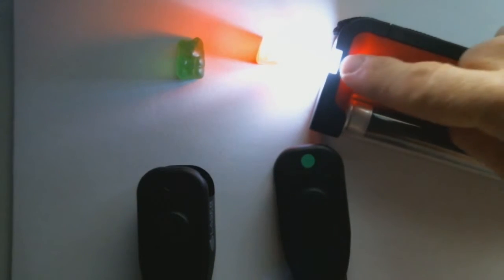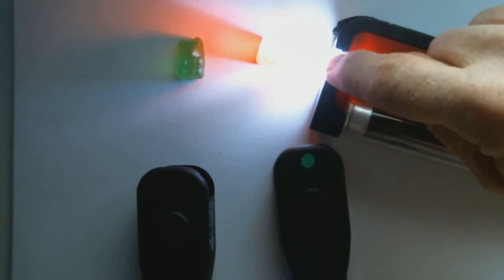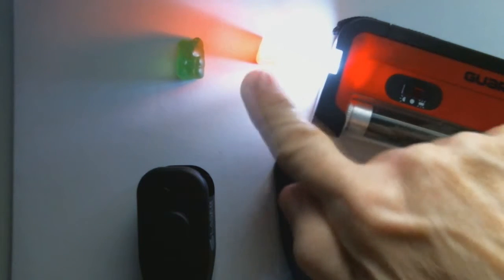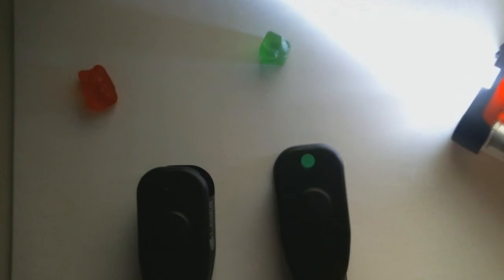do you see how the red light is coming out of the back of my gummy bear? That's because the white light, which is composed of all colors—red, orange, yellow, green, blue, purple, and even more in between there—the red light is the only one that's allowed to pass through the gummy bear.